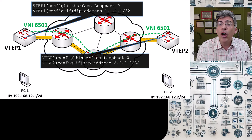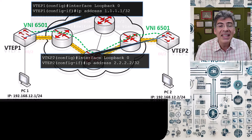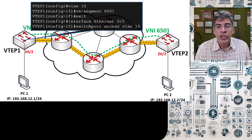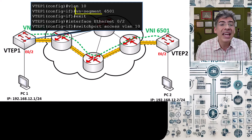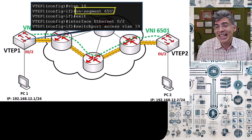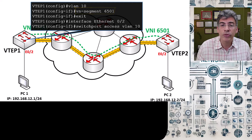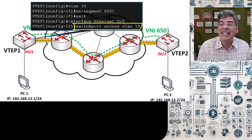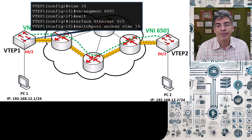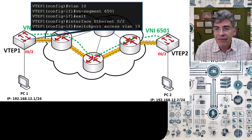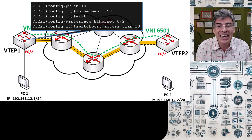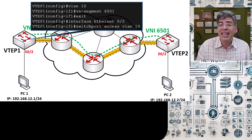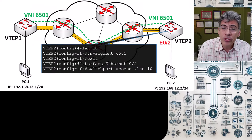Next we have to configure the overlay network on our VTEPs. First we'll create the VXLAN Network Identifier, or VNI. To do so we go to VTEP1 and we create a local VLAN that exists on this VTEP. We associate that VLAN with VNI 6501 using the 'vn-segment' command. Next we simply assign Ethernet0/2, which is the port on which PC1 is connected, to VLAN 10. So now we've mapped VNI 6501 to the local VLAN 10. Remember, VLAN 10 here has only local significance — on another VTEP you may map another VLAN to VNI 6501, or you may even map VLAN 10 to another VNI completely. This VLAN has no significance outside of this particular VTEP. Now we configure VTEP2 in a similar way.